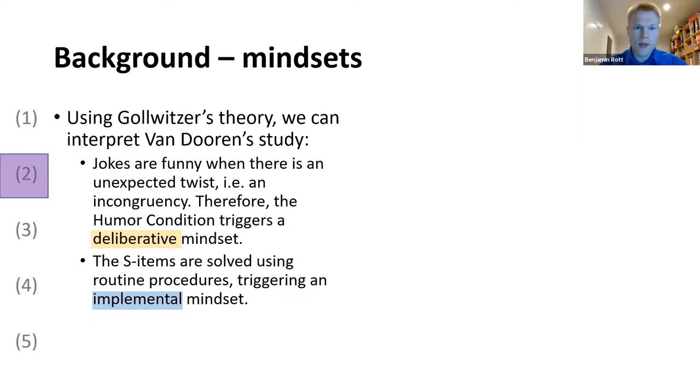Using Gollwitzer's theory of mindsets, we can now interpret Van Doren's study. Jokes are funny when there is an unexpected twist or an incongruency. Therefore, the humor condition triggers a deliberative mindset. And the S-items are solved using routine procedures. Therefore, they trigger an implemental mindset.